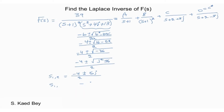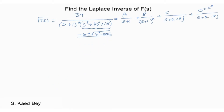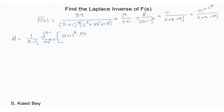In addition, coefficients B, C, and D can be found using the cover-up method. This is because the denominators of coefficients C and D are non-repeating and the denominator of coefficient B is the highest repeating order.